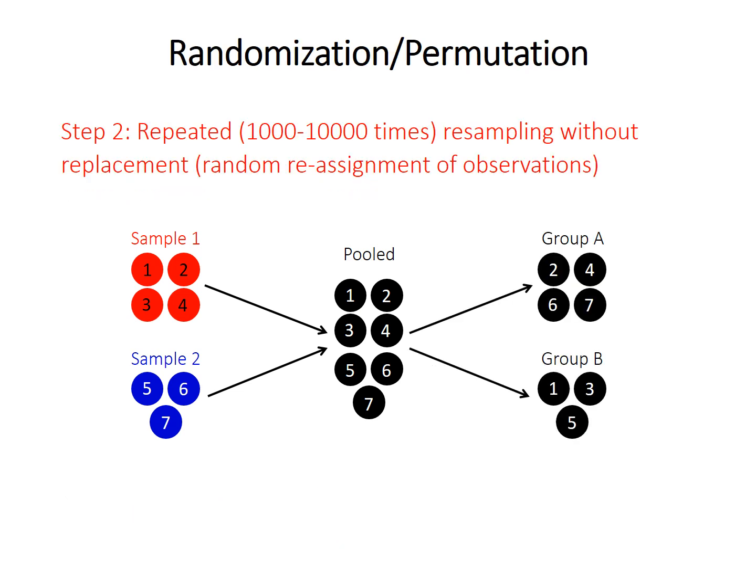So the next step has a couple different options, and the first one is a method called randomization, also sometimes called permutation. So what we're going to do in this one is randomly resample that pooled data without replacement. So we keep the structure of the original samples, so we'll create two new random groups. One will have four and one will have three observations in this example here, because in our original data, sample one had four observations and sample two had three. So this is what I mean by keeping the structure. We're going to use the sample size structure from the original data to make our simulated data.